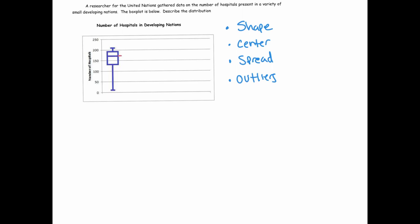Let's start with the one thing we know based on what we know about box plots. This is the median, right? That's what that line represents. The median number of hospitals is about halfway between 150 and 200, say 170 to 175.